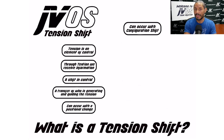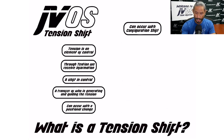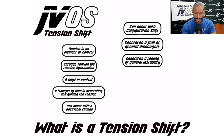Now the person on the bottom is the one generating the tension and control rather than the person on top. Tension shifts generate a feeling of general discomfort for the person who is on the defensive side once the shift has occurred. Tension shifts also generate a feeling of general instability.